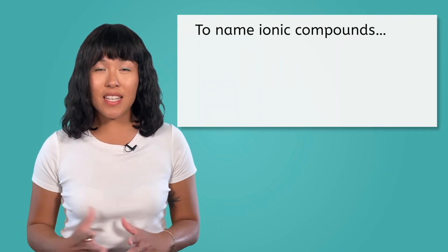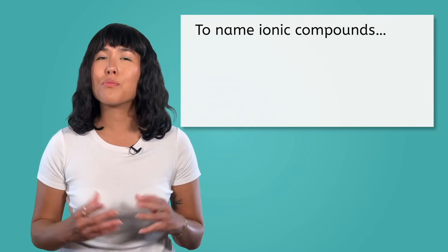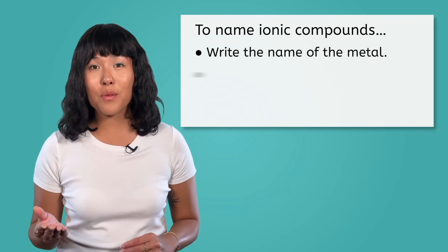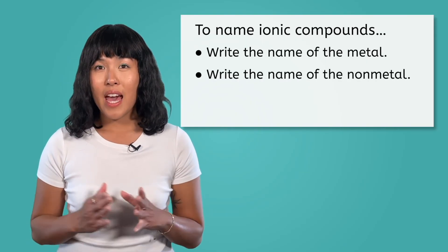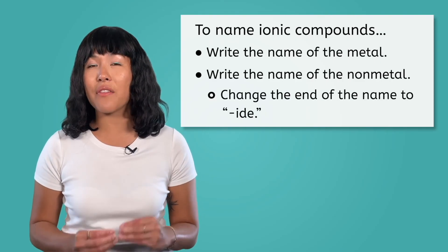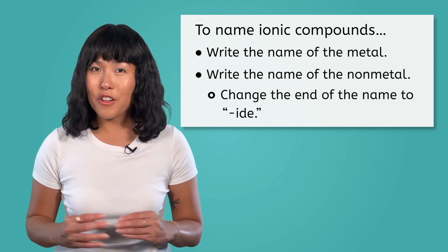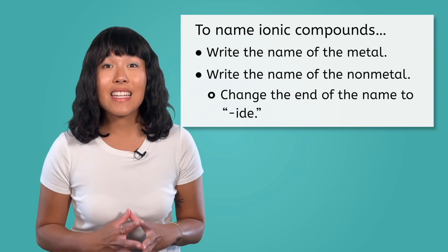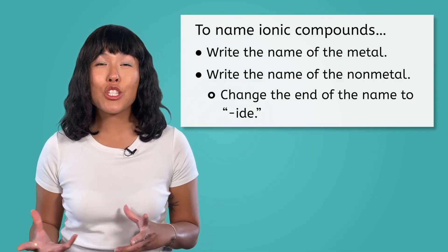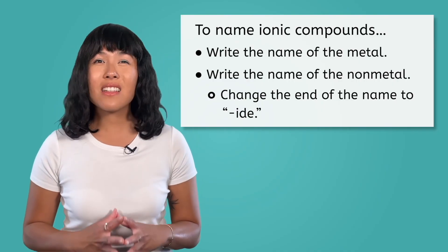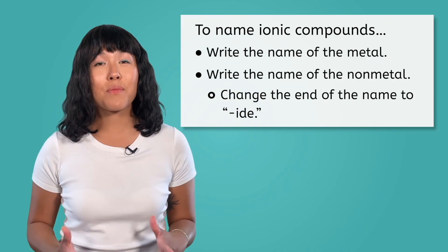Now that we have learned how ionic compounds are formed, it is important to learn how to name them. The naming convention for ionic compounds is pretty straightforward. First, you write the name of the metal, followed by the name of the non-metal. However, you have to change the ending of the non-metal so that the name ends in I-D-E. For some of these elements, like fluorine, that is easy. You just change the N to a D to get fluoride. But for others, like oxygen, it is a little more challenging. Oxygen becomes oxide.